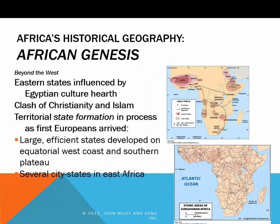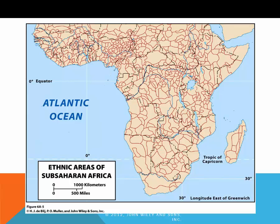We also see early states emerging in the locations of present-day Sudan, Eritrea, and Ethiopia, which were influenced by the Egyptian cultural hearth. State formation began to happen and was in progress when Europeans made contact in the late 1400s. The ethnic areas map shows us how Africa has always been a realm of rich and varied cultures, diverse lifestyles, technological progress, and external trade — but because it was so fragmented, it was easily susceptible to European intervention.